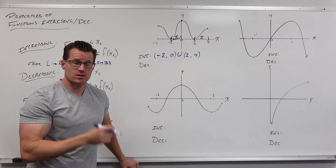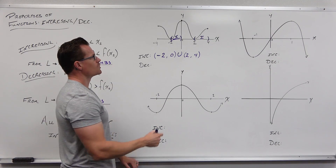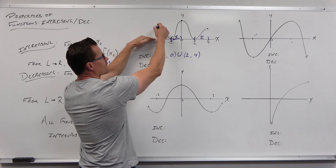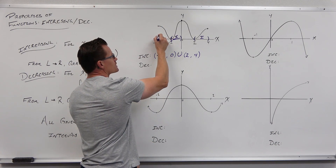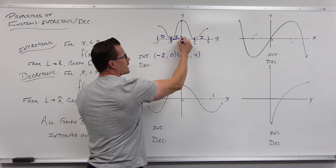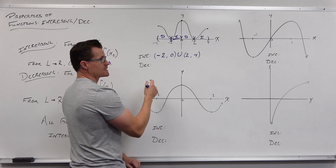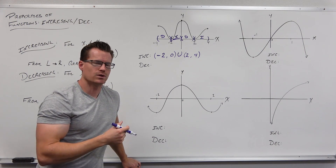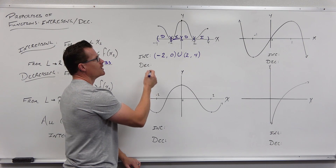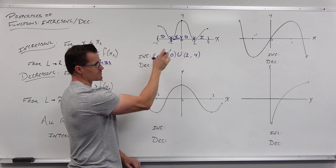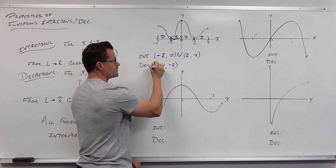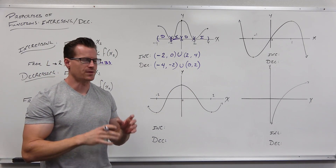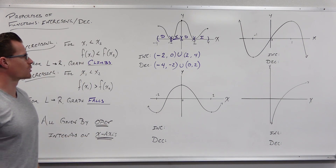Decreasing is the opposite idea. As you're still moving from left to right, your graph is falling. So find the intervals on the x-axis where when I look from left to right, my graph is falling. My graph starts at negative four and it's falling until we hit negative two. So this would be an interval of decreasing. Our graph is decreasing wherever it's not increasing. Sometimes you can have a constant — where it's horizontal for a time and it will neither increase nor decrease, it'll just stay constant. In our case, we have an interval of decreasing from negative four to negative two — open interval. Then again from zero to two. That is how increasing and decreasing work. They're always open. They're always intervals of the x-axis.